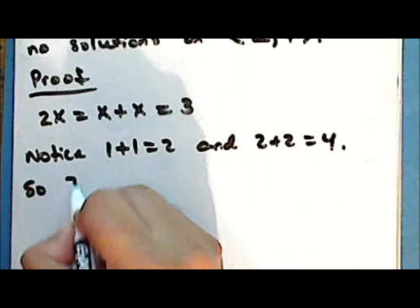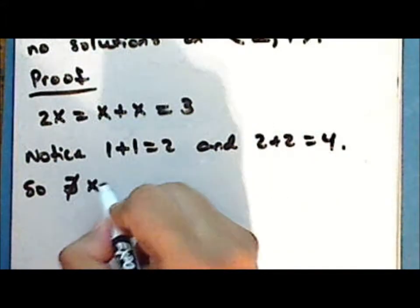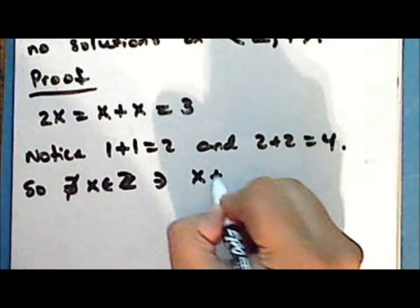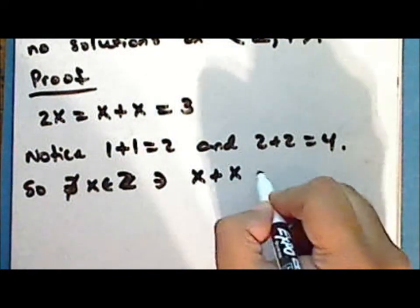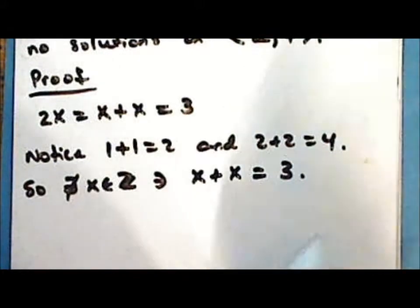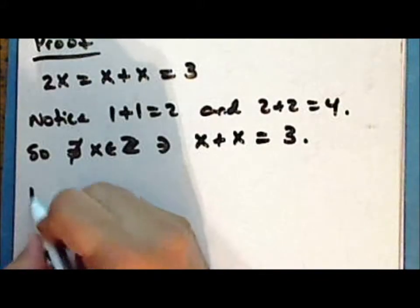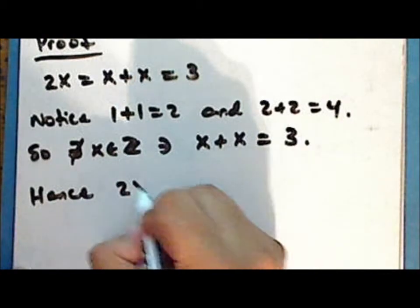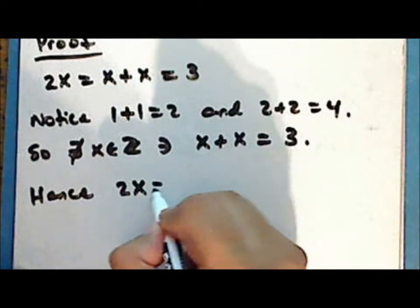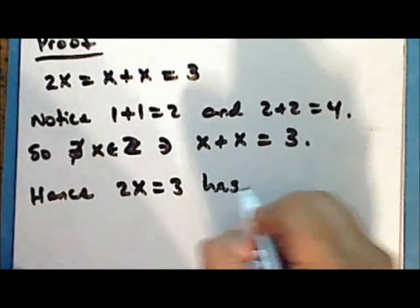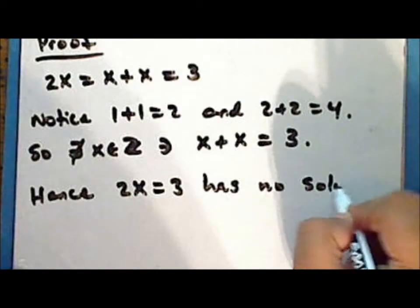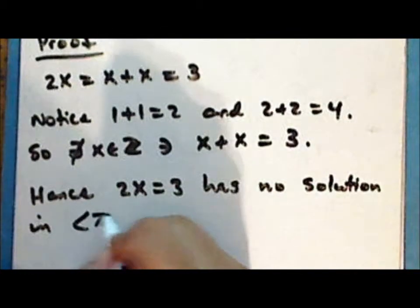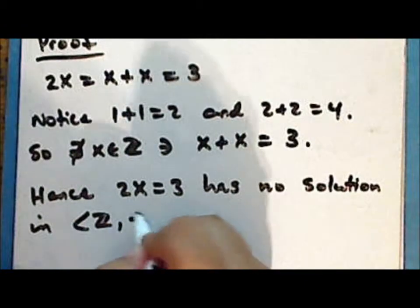There does not exist an integer x such that x + x = 3. Hence the equation 2x = 3 has no solution in the group consisting of the integers under addition.